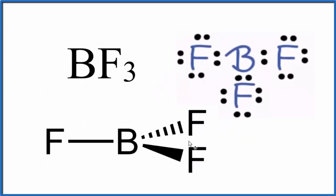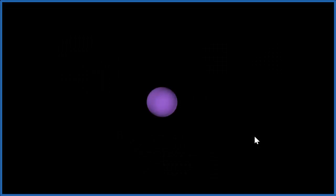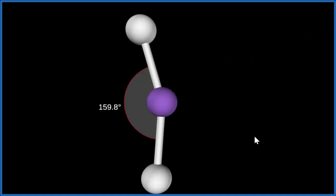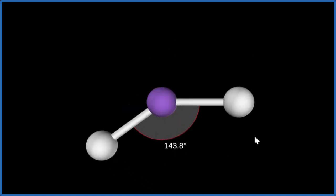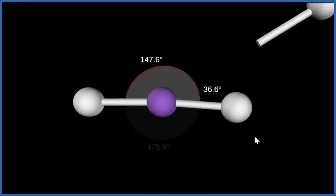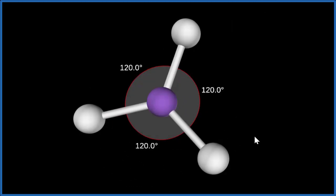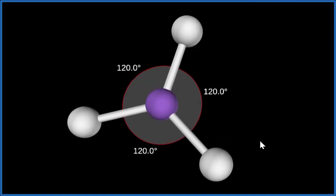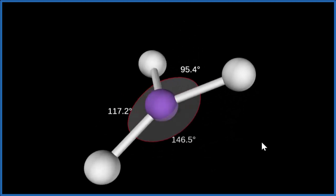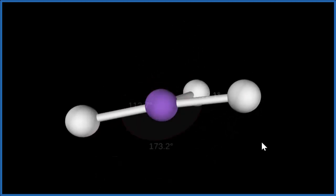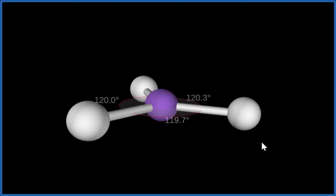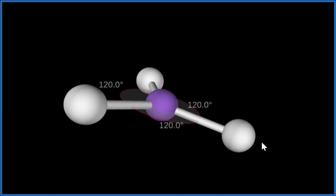Let's look at this in three dimensions to really understand the bond angles for BF3. The boron is shown in purple here. We place three fluorine atoms — one, two — and you can see they spread out. Right now we have a linear molecule. We add the third fluorine, and we get a bond angle of 120 degrees because we have a trigonal planar molecular geometry. You can see those fluorine atoms are in a plane around the boron, and the bond angle is 120 degrees.